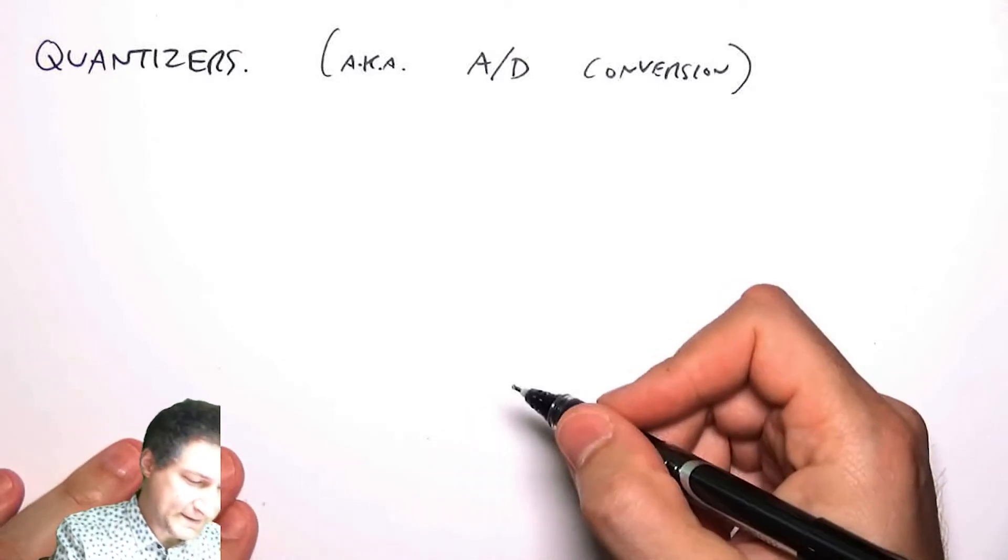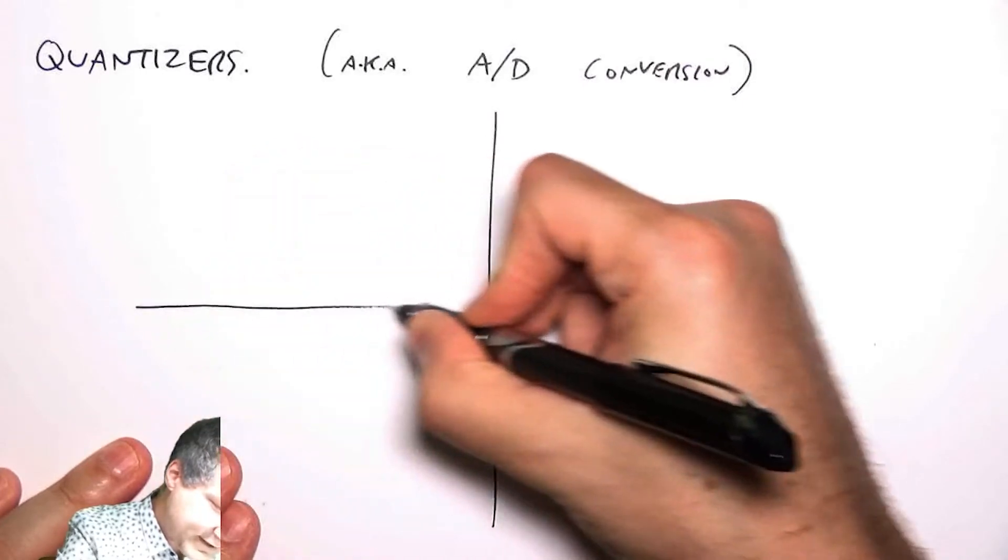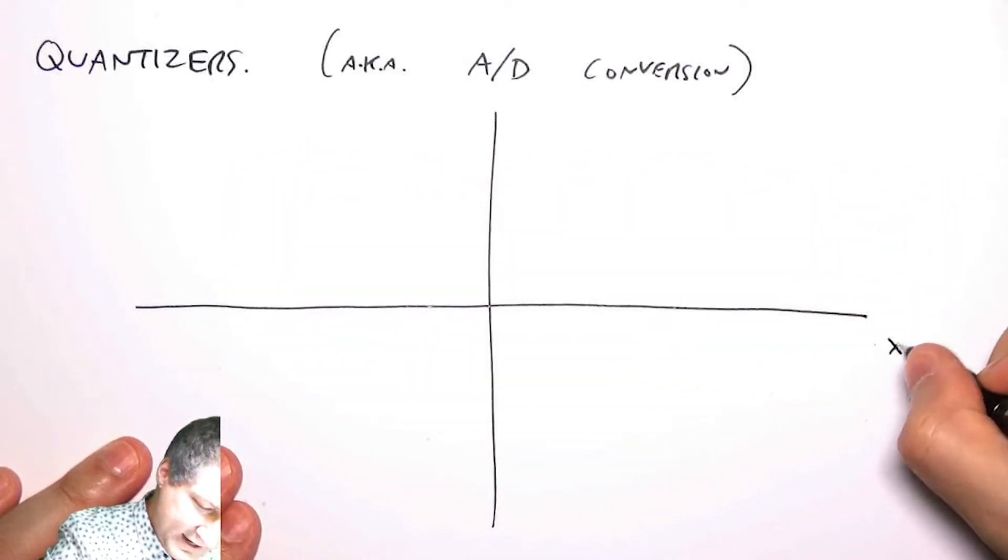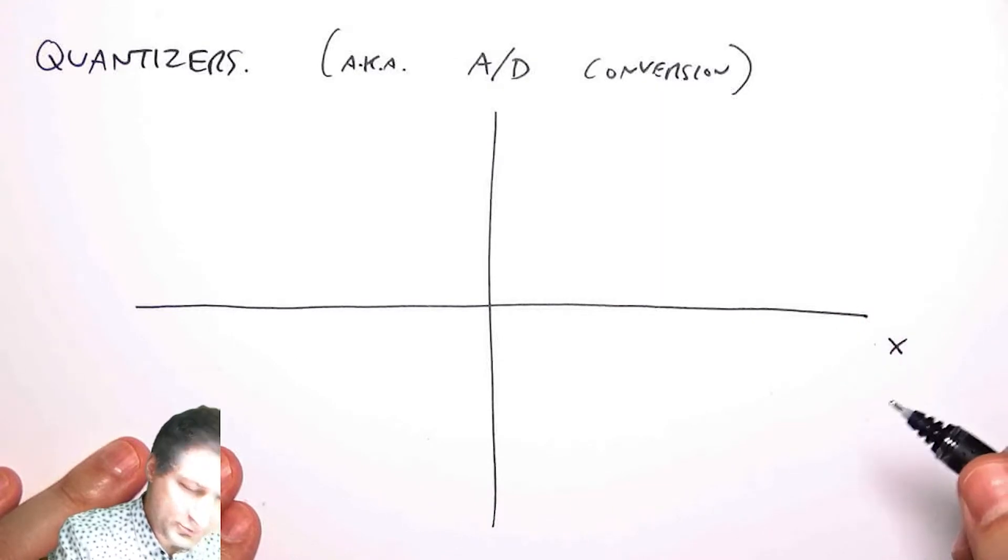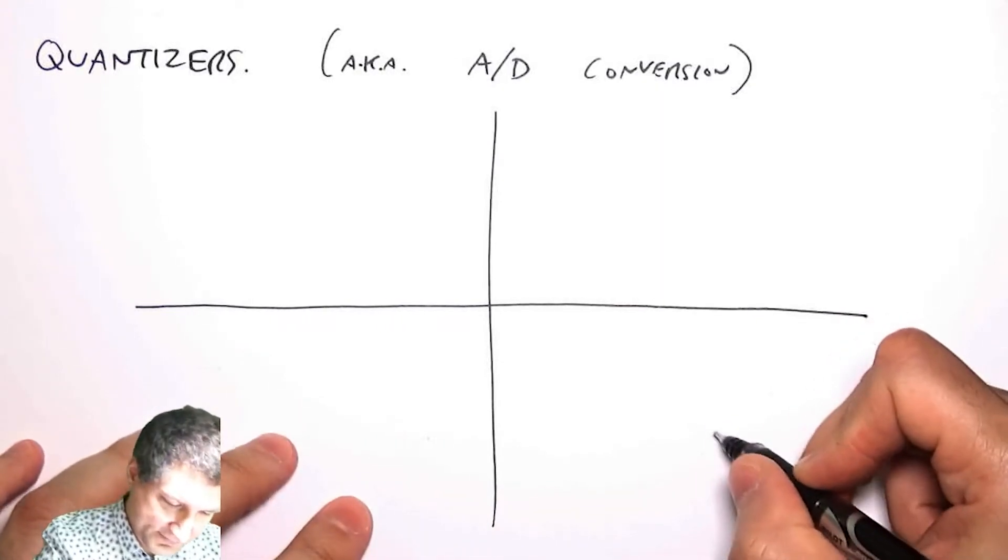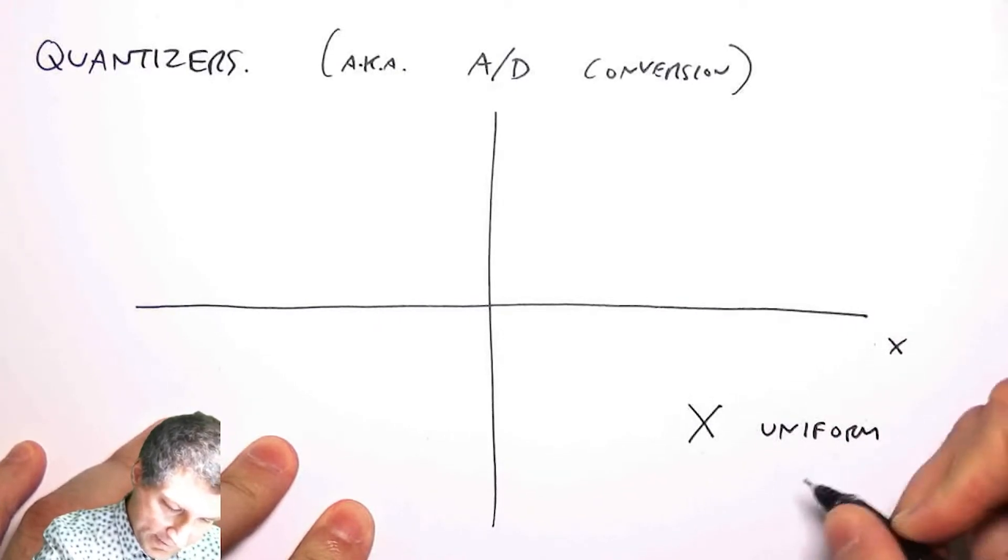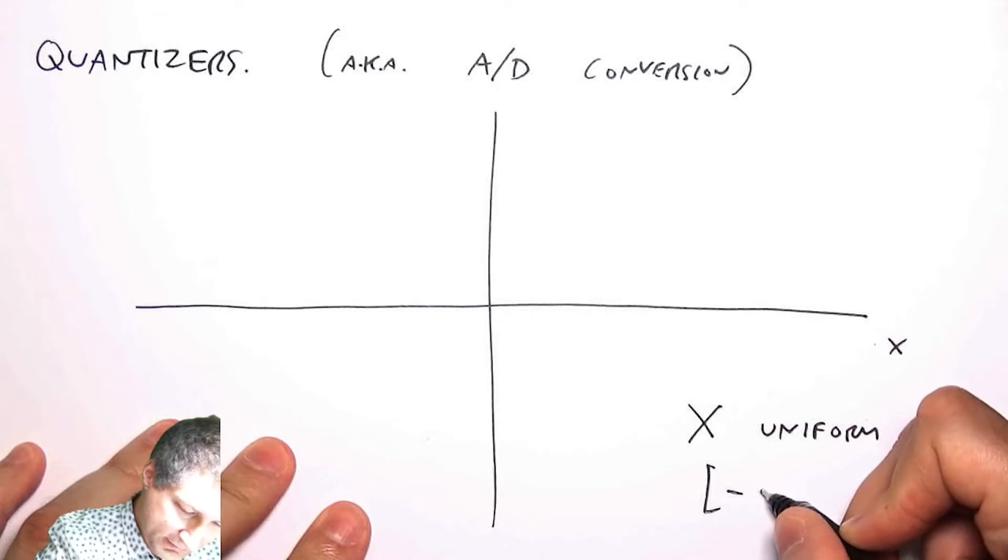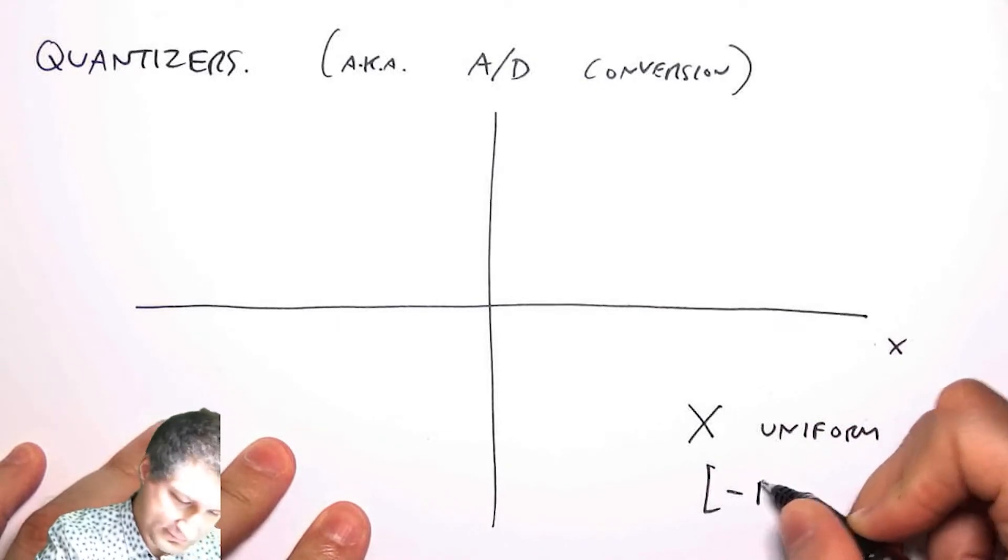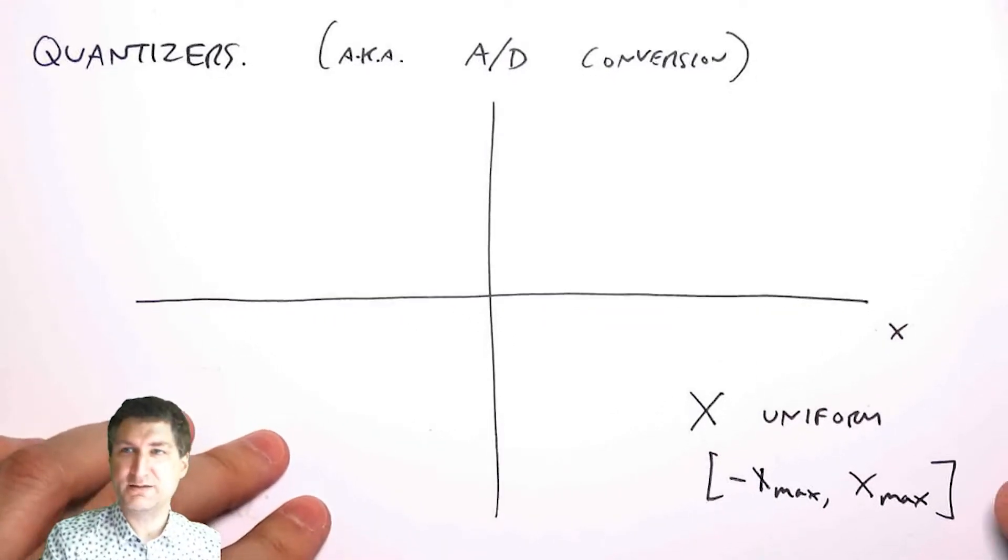So the idea is that I have some underlying random variable. Let's suppose that it has a uniform PDF. So we're going to suppose that X is a uniform PDF over the range like minus X_max to plus X_max. This is the dynamic range of my incoming signal.